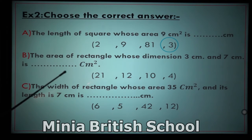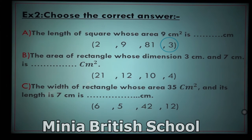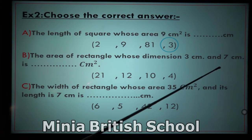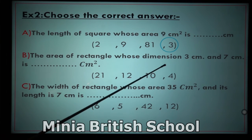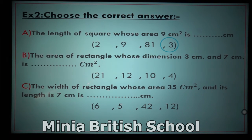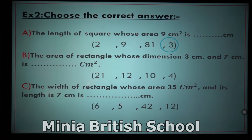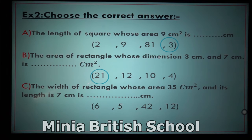Letter (b): find the area of a rectangle whose dimensions are 3 centimeters and 7 centimeters. The word 'dimensions' means the length and the width. The length equals 7 and the width equals 3. To find the area of the rectangle, multiply the length by the width: 7 times 3 equals 21, so the area of this rectangle equals 21 square centimeters.